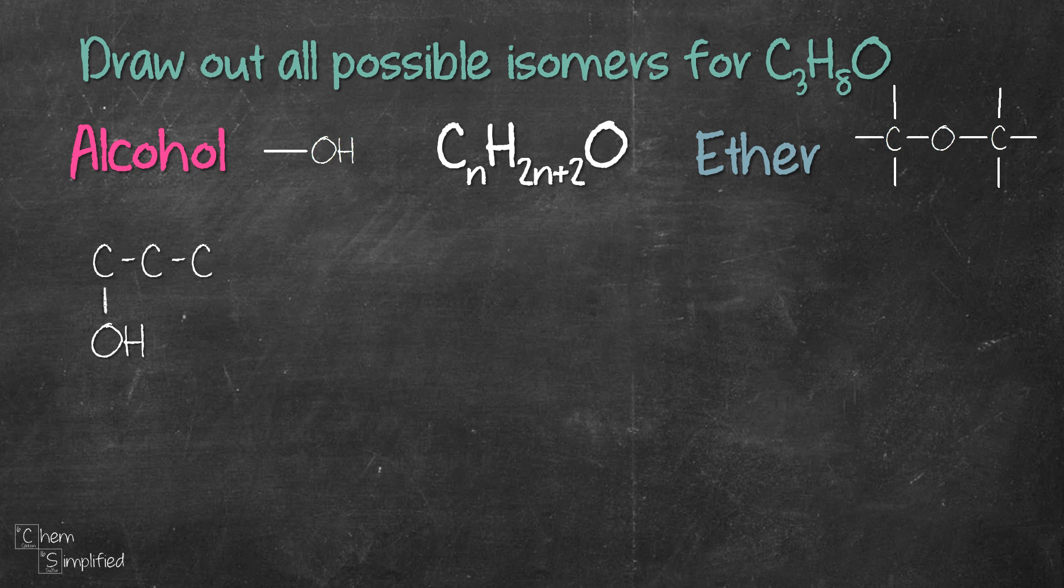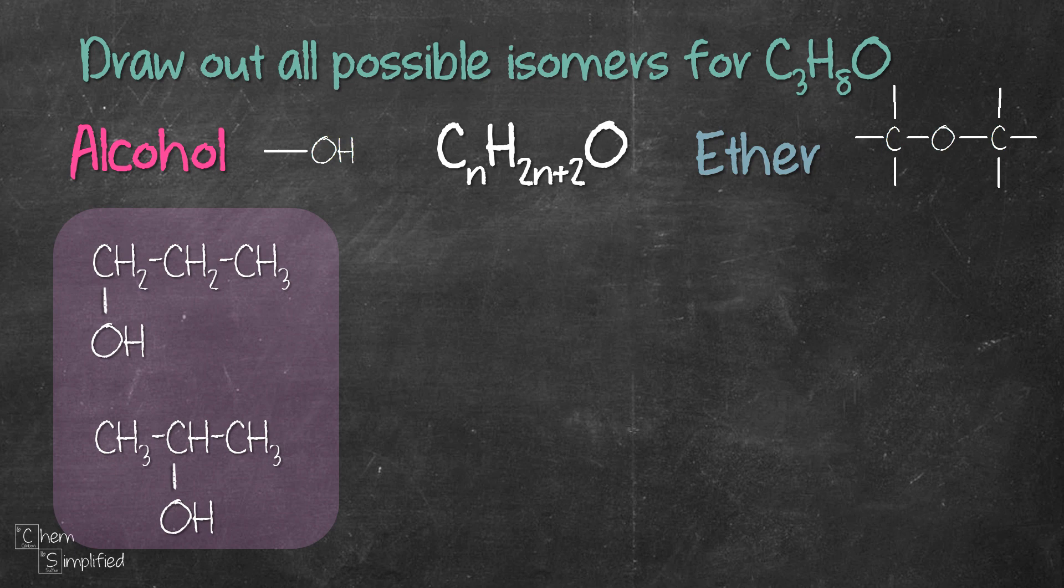There's another position where we can place the OH which is on the second carbon like this. These are the two alcohol isomers. If we place OH on the third carbon, it's actually the same as the first structure, so we'll just ignore that. We add in the hydrogen to complete the structure and here's what we have.